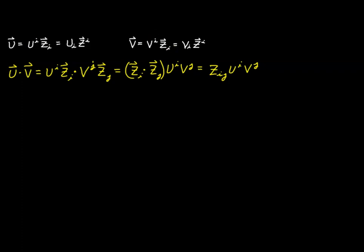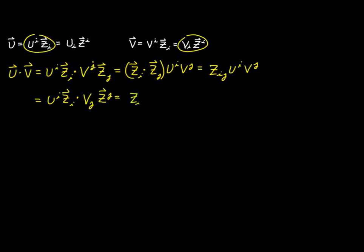Now let's go back and use the combination of the covariant basis for u with the contravariant basis for v. We'd start with u^i z_i as before, but this time dot it with a contravariant expression, using a different letter: z^j. This gives us z_i dot z^j, a covariant basis vector dotted with a contravariant basis vector, with u^i v_j left over.